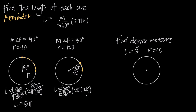2 times 120 is going to give us 240, so this is going to become 240π. Then when we take 240π and divide it by 12, we get the length is equal to 20π.